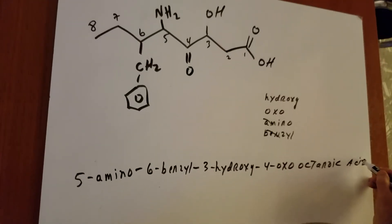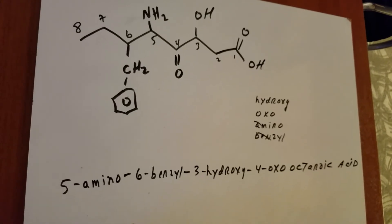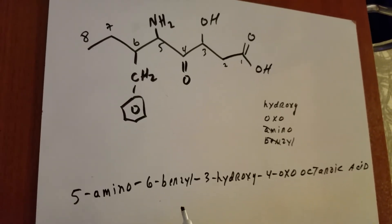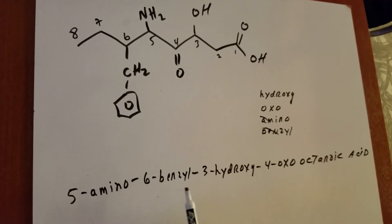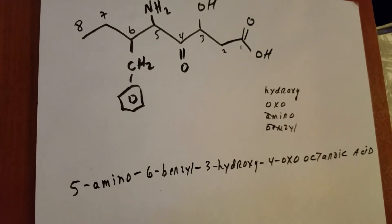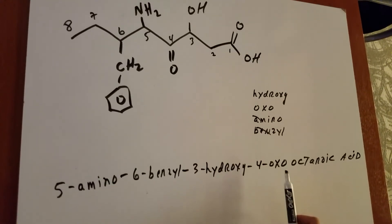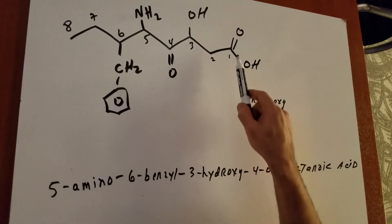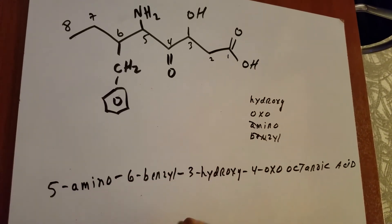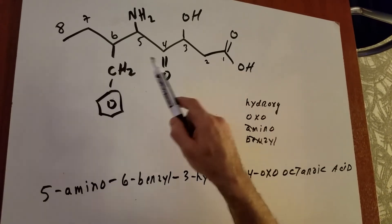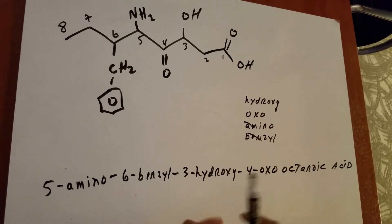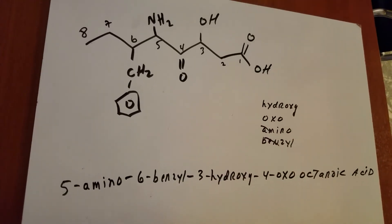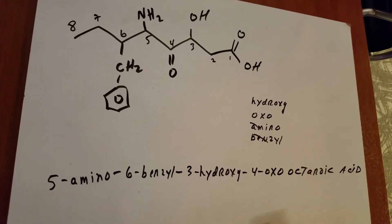So there you're going to look, and we see we have a 5-amino, 6-benzyl, 3-hydroxy, 4-oxo, octanoic acid. Remember, whenever you do these problems, it's to number it first. That takes the priority over everything. After you number the chain, you then worry about alphabetizing all the groups that come off.